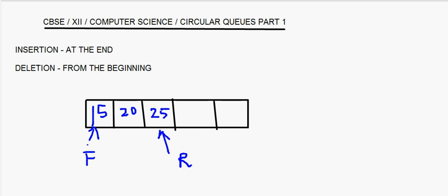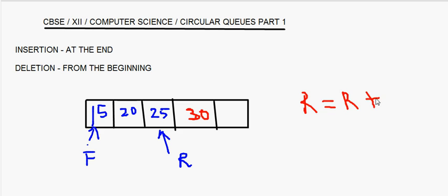Now when you want to insert one more element, let's say you want to insert element 30. There are two spaces which are free. When I want to insert that element, rear becomes equal to rear plus 1, so basically rear moves forward to the next position. Now the rear is here.